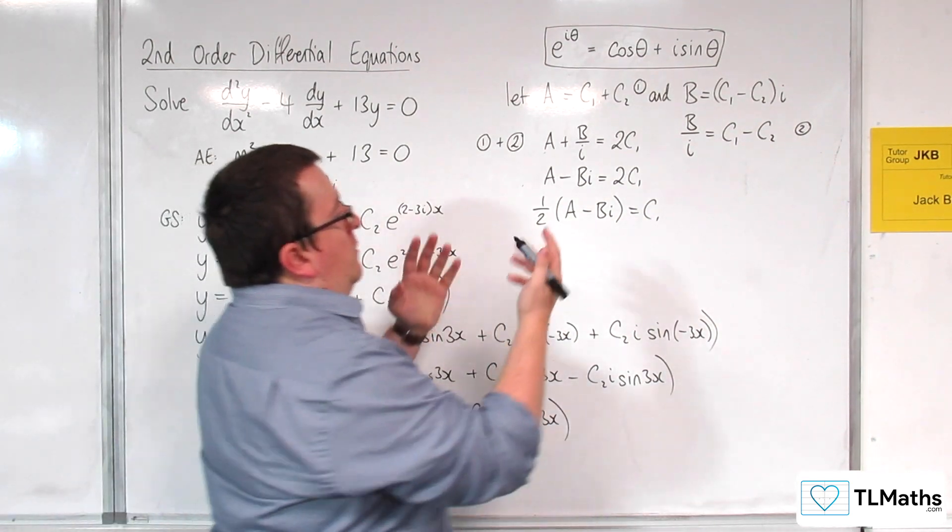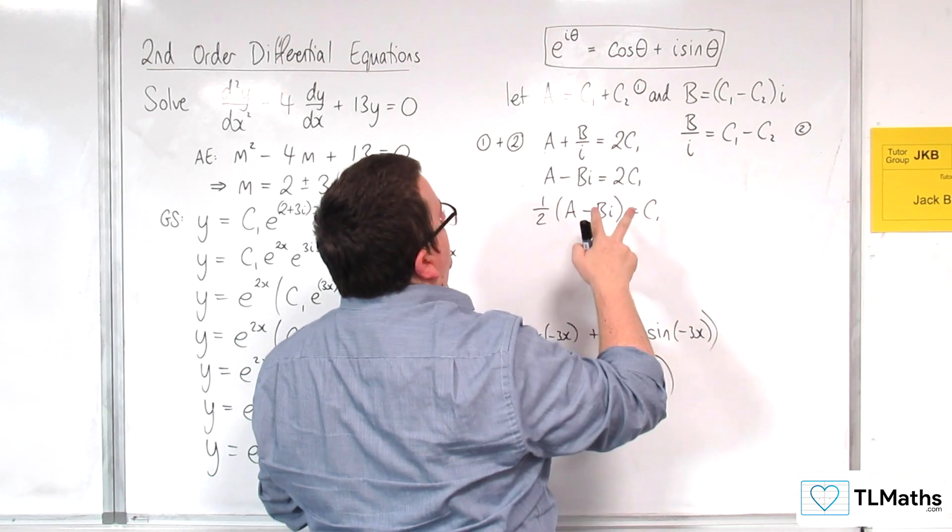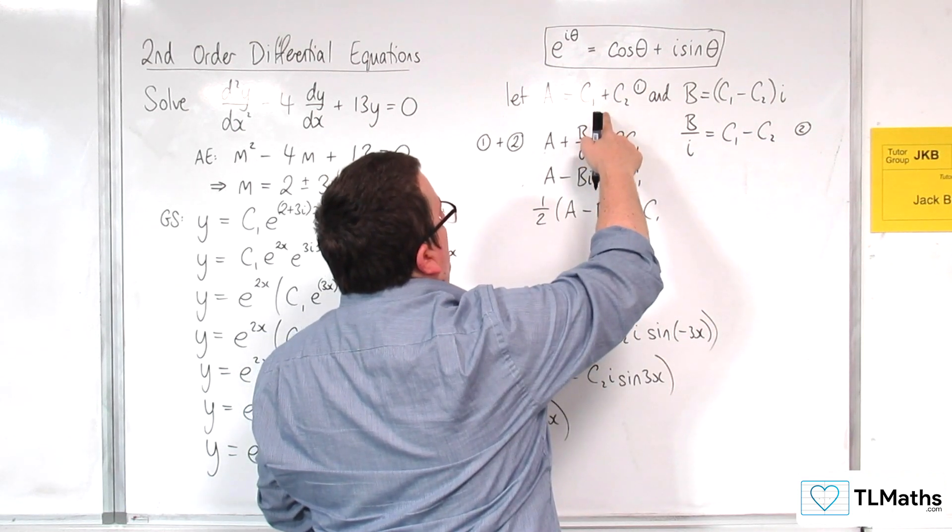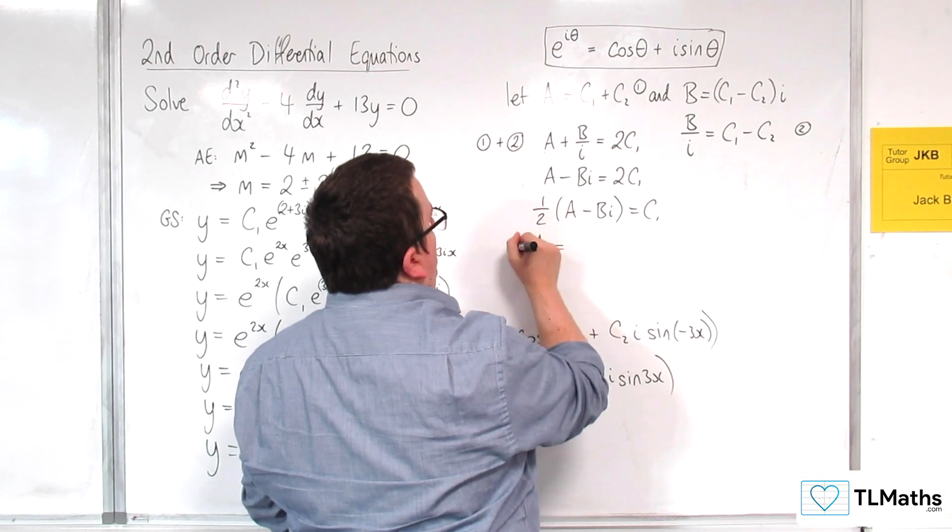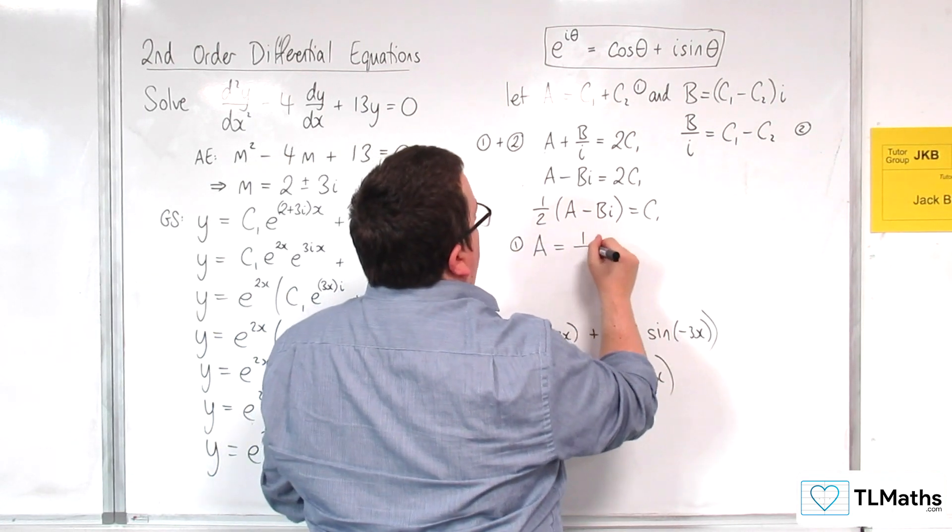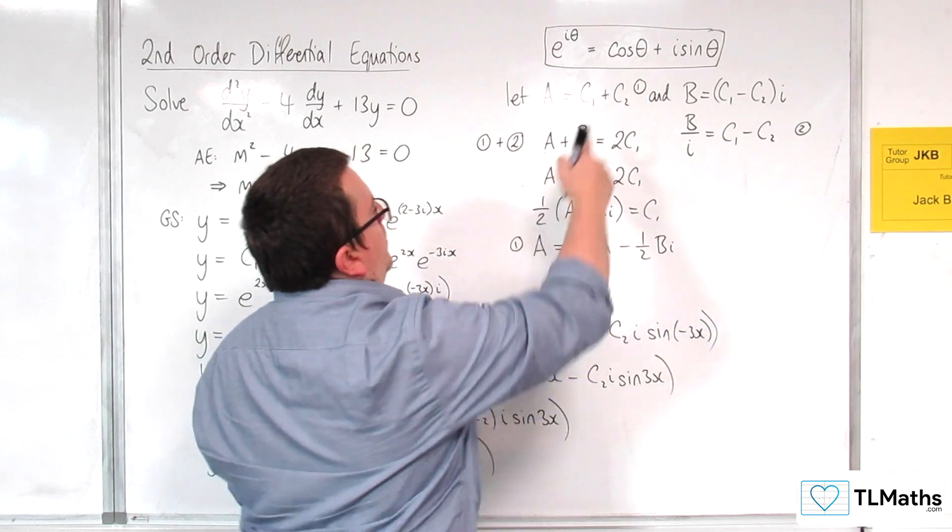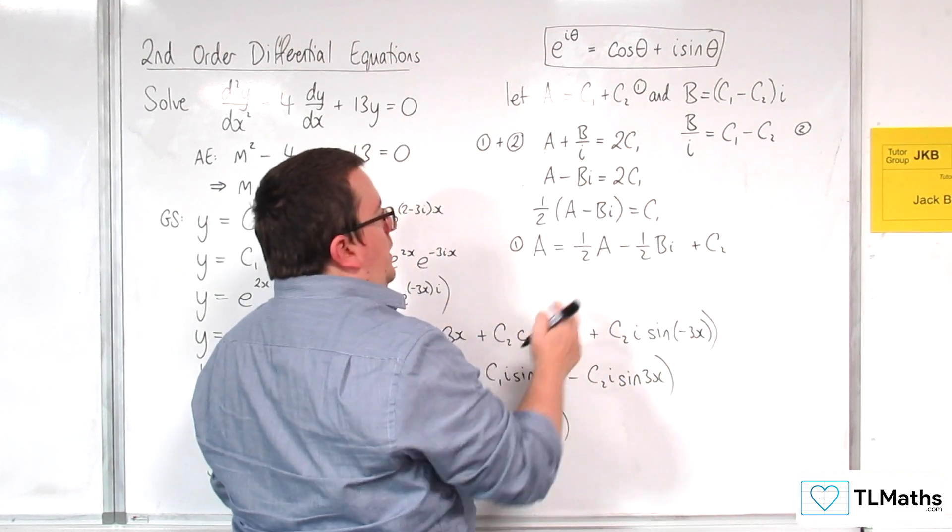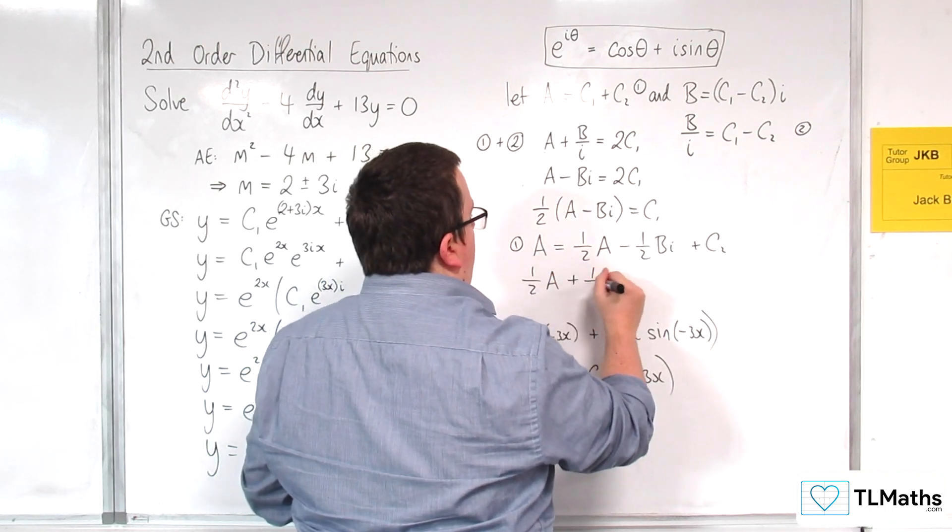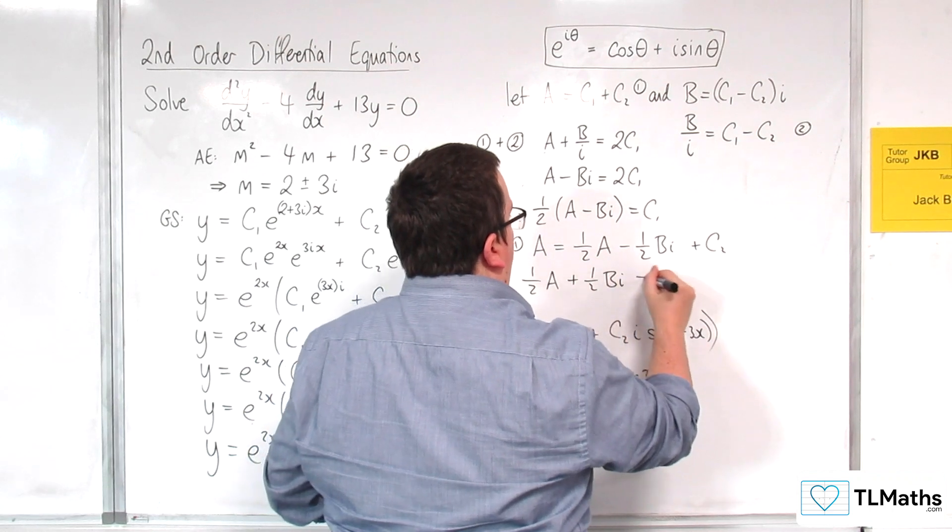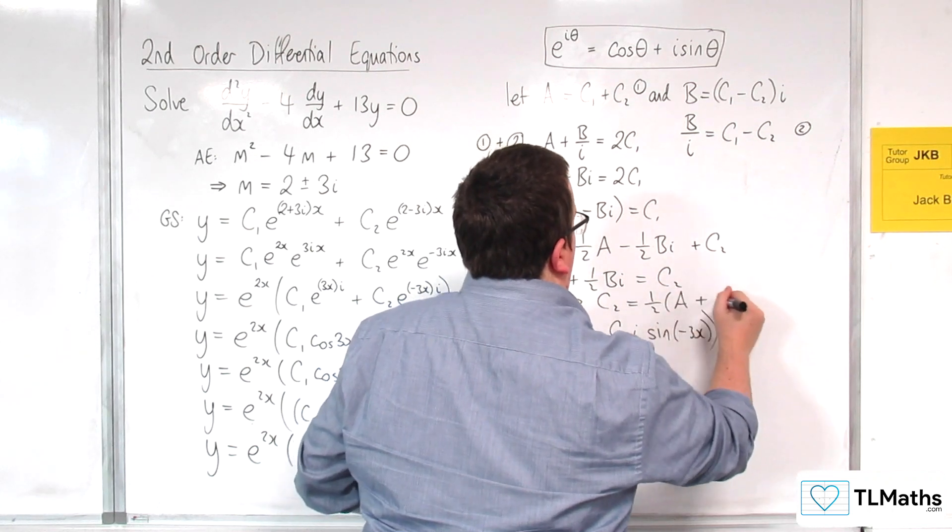Now, that I've got c1, I can substitute that into one of the others. So, it probably makes sense if I substitute it into this one, then I would get a is equal to, so this is substituting into equation 1, c1, which is the half a take away a half bi that I've got there, plus the c2. So, take half a from both sides, add the half bi to both sides, and so c2 has got to be one half of a plus bi.